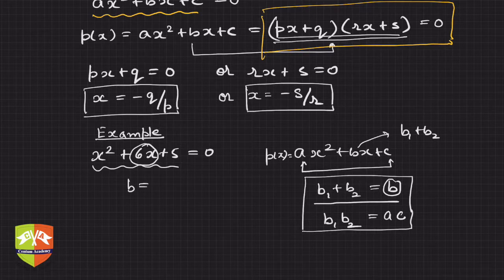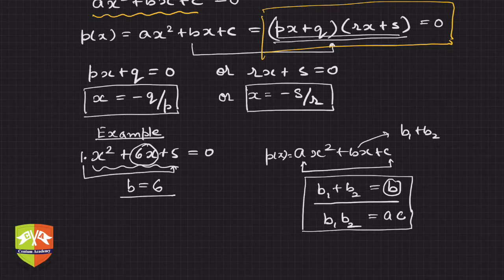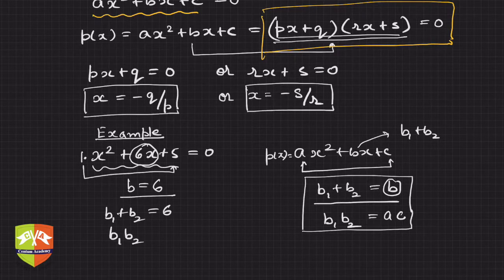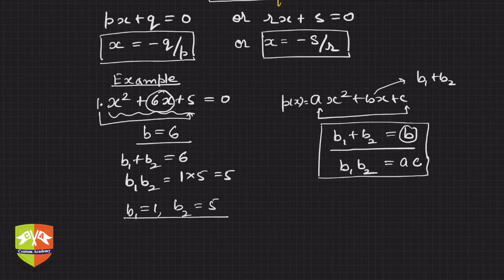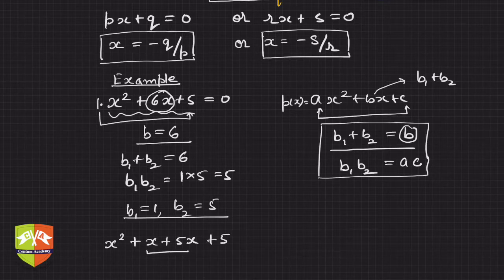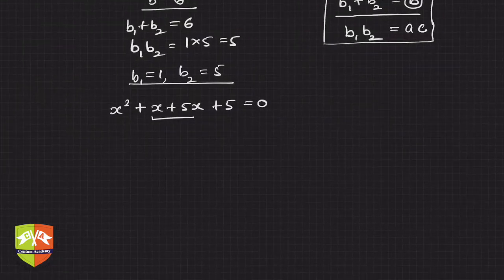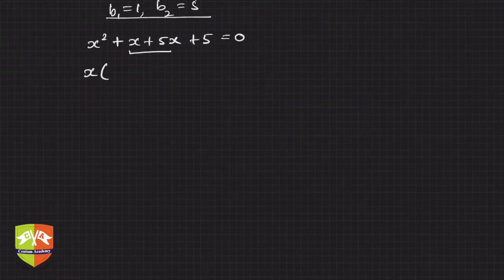In our example, b = 6, so we need to break 6 into two parts such that their product is ac = 1 × 5 = 5. So b1 + b2 = 6 and b1 × b2 = 5. By trial and error, b1 = 1 and b2 = 5 clearly works. So we split the polynomial as x² + x + 5x + 5 = 0, since x + 5x = 6x.